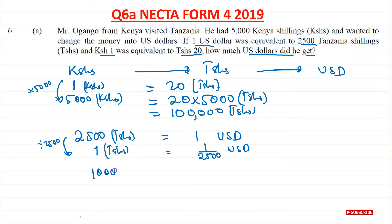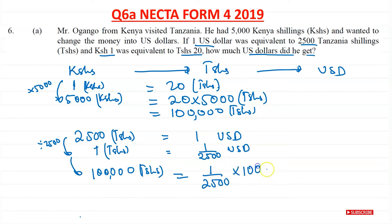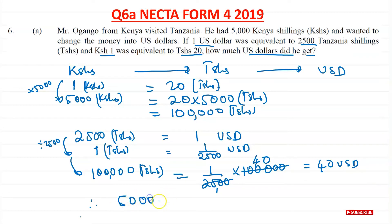Now to go from 1 Tanzanian shilling to 100,000 Tanzanian shillings, we need to multiply by 100,000 on this side too. So 1 over 2,500 times 100,000. That cancels — there's 1 over 25 there, and 4 and 100, giving us 40. So 1 times 40 is just 40. We can conclude this is 40 USD. Therefore, 5,000 Kenyan shillings is equal to 40 US dollars.